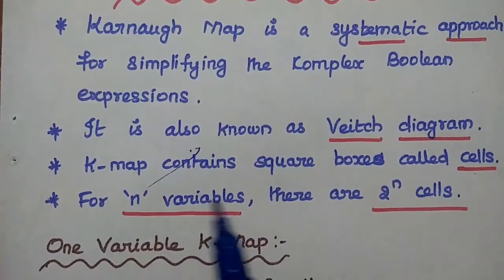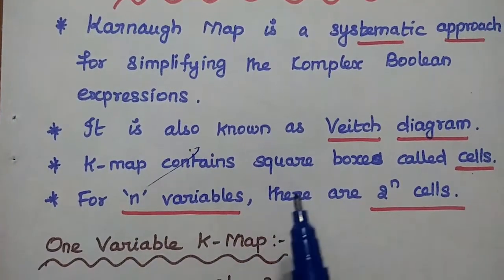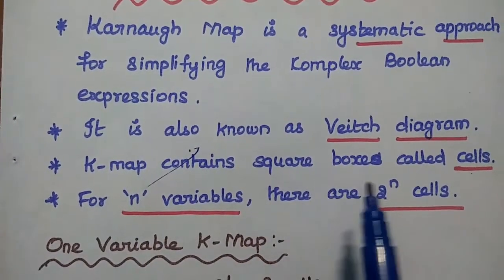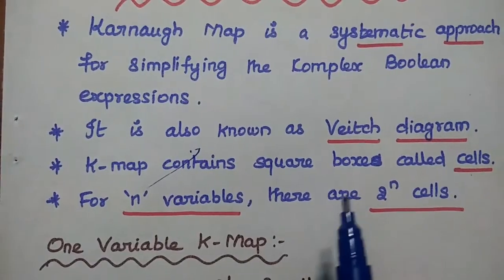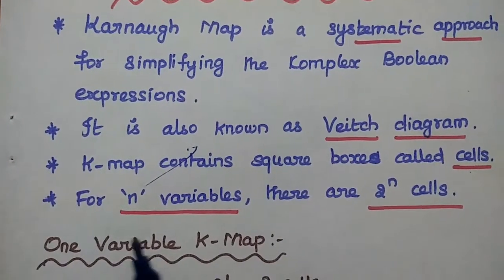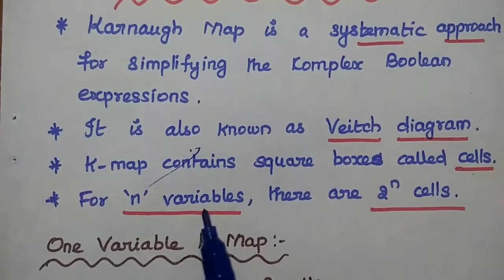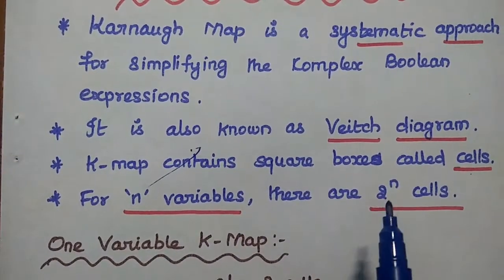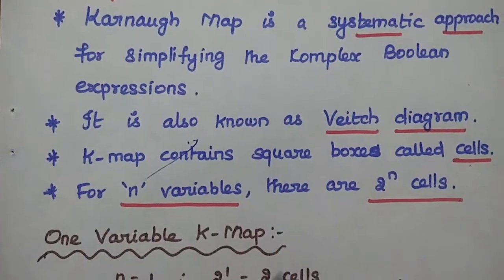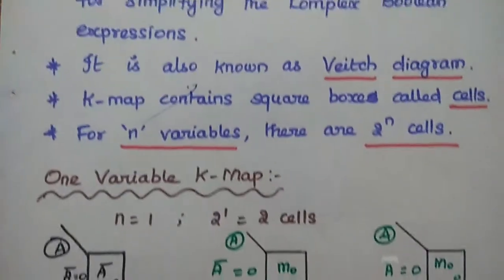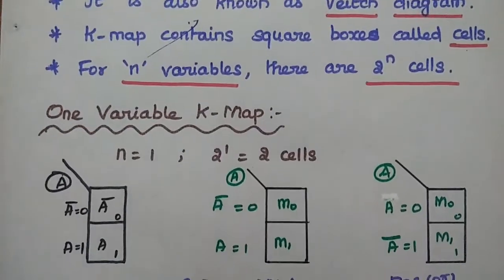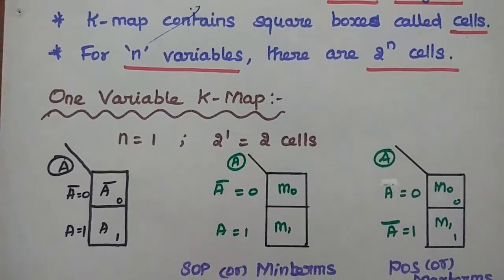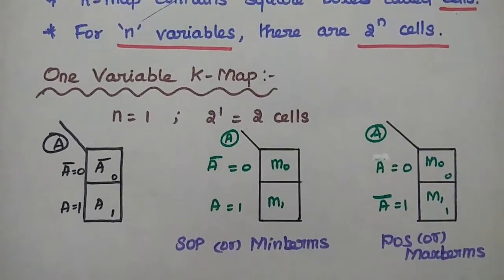This K-map contains square boxes called cells. For n variables, there are 2 to the power n cells. Let's discuss the K-map formation.